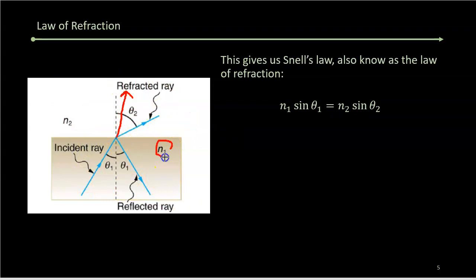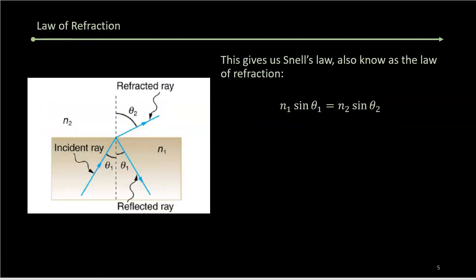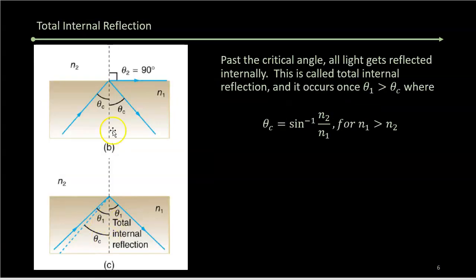Well, something special happens when you get far enough. As this ray gets further and further from the axis, you hit a point where it becomes parallel, and that's called the critical angle.